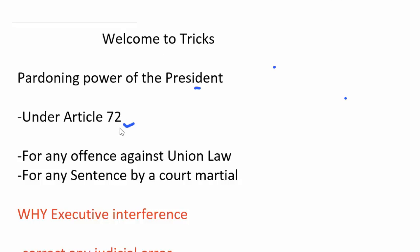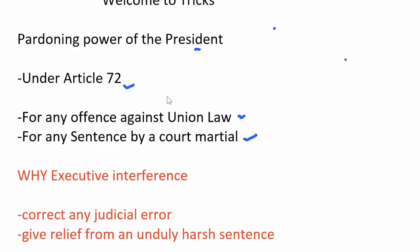Under Article 72, the President of India has been empowered to grant pardon when a sentence is given for any offense against union law, or for any sentence by a court martial. But why this executive interference? Why has this pardoning power been granted to the President? For two reasons.